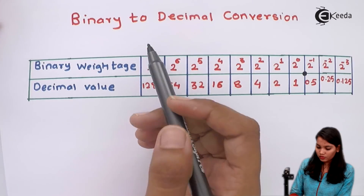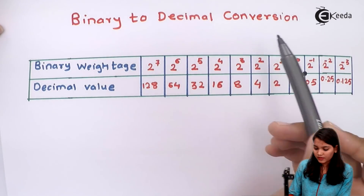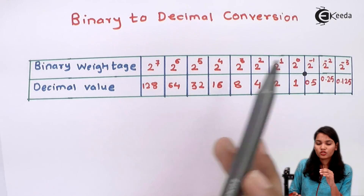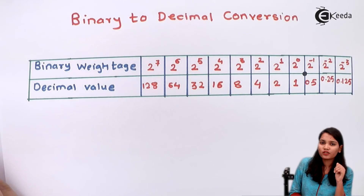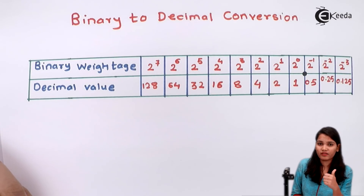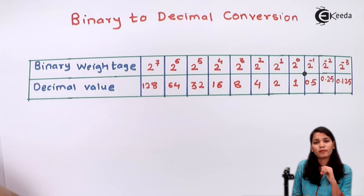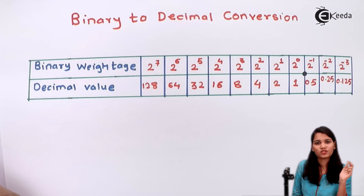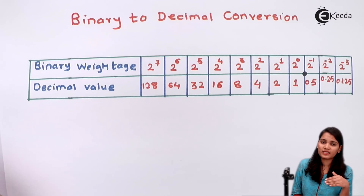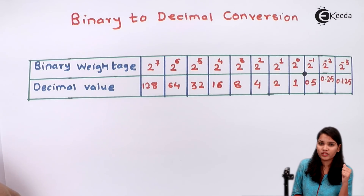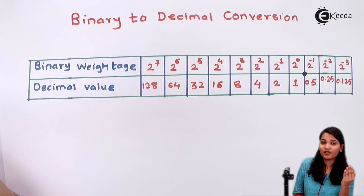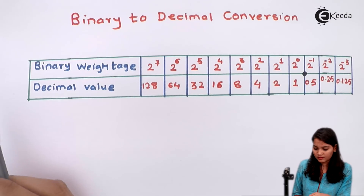So let's see binary to decimal conversion. As I mentioned, there is the radix value, that is the base value. The binary number system has a base value of 2, and the decimal number system has a base value of 10. Let's see how this conversion happens.